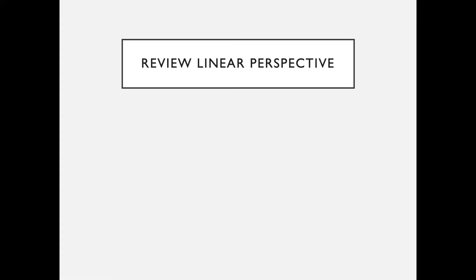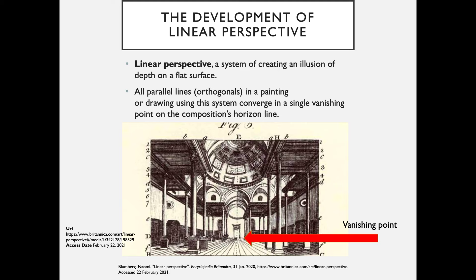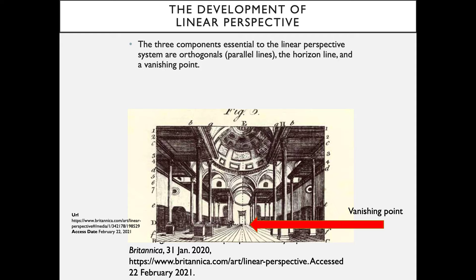A review of linear perspective: linear perspective is a system of creating an illusion of depth on a flat surface. All parallel lines — called orthogonals — in a painting or drawing using this system converge in a single vanishing point on the composition's horizon line. The three essential components are orthogonals, the horizon line, and a vanishing point. Objects in compositions are rendered increasingly smaller as they approach the vanishing point, creating the illusion of three-dimensional depth on a two-dimensional plane.